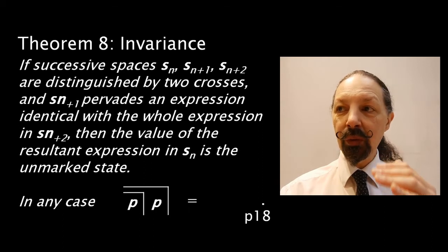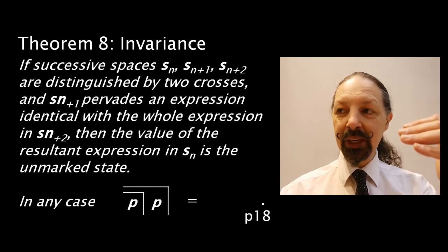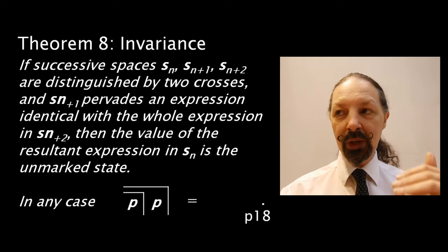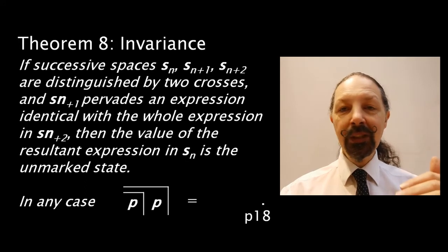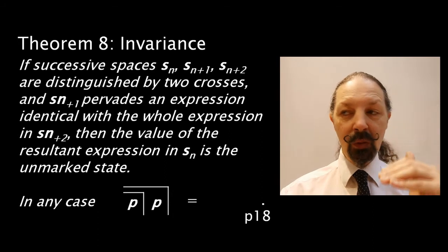It defines or distinguishes successive spaces. Sn, let's say, is on the outside. Sn plus one is one level down. Sn plus two is two levels down. And these spaces are distinguished by two crosses. You have them nested one on top of the other.